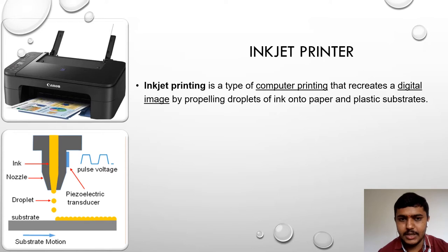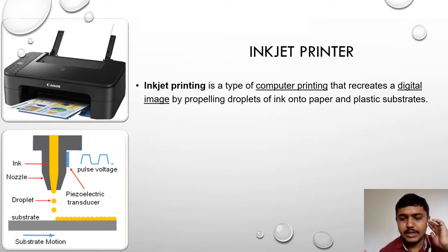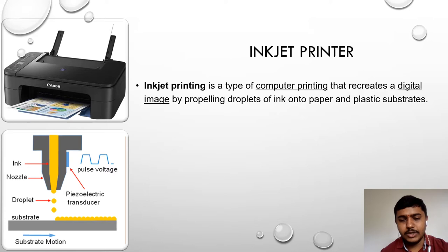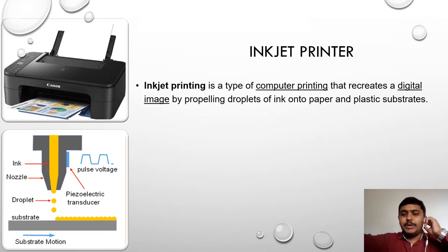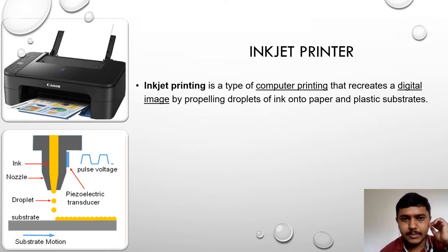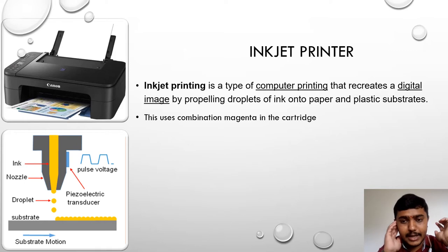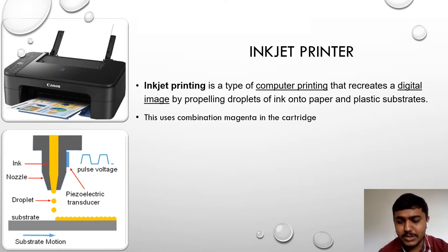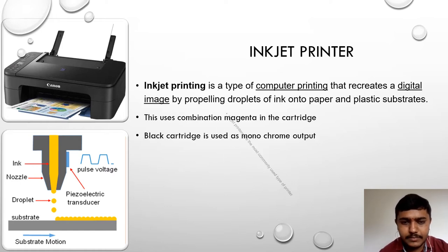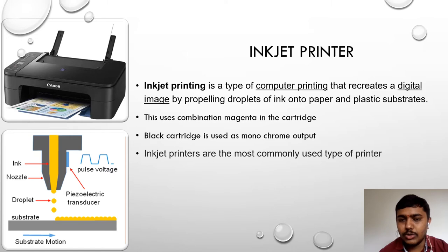In the inkjet printer, whenever we take a print on a paper, the ink is pumped through a given tube. Whatever ink goes through that tube is properly utilized on the pages. It uses a combination of a magnet in the cartridge — the magnet provides a variety of colors and helps produce a good-looking picture. A black cartridge is used by default as a monochrome output.